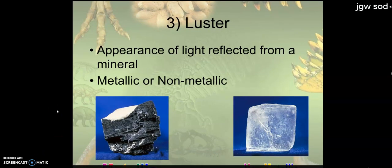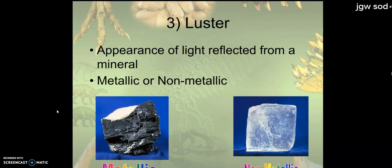Luster. You could have them as metallic or non-metallic. Metallic means it looks like a piece of metal. Non-metallic means it looks like a piece of dirt or a piece of glass. So either it looks like metal or it doesn't. That's your luster.